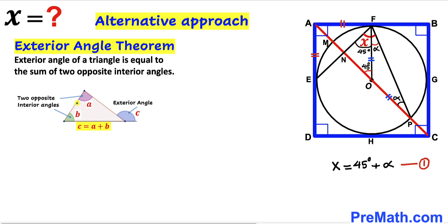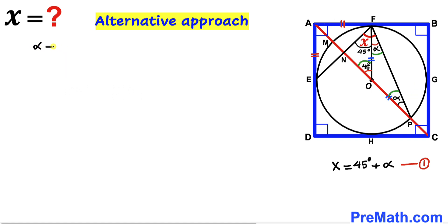The exterior angle C equals angles A plus B. Applying this: the exterior angle of 45 degrees equals alpha plus alpha, giving 2 alpha equals 45 degrees. Dividing both sides by 2, our angle alpha equals 22.5 degrees.